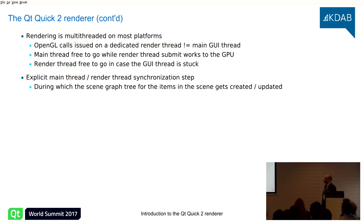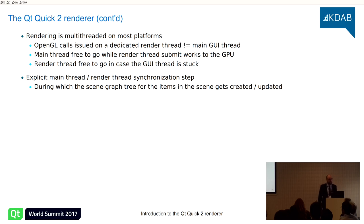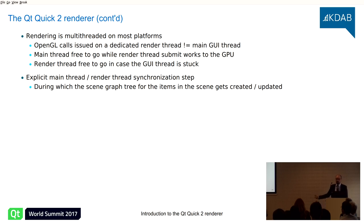The rendering is actually multithreaded on most platforms unless you disable it. This means the OpenGL calls that render your scene graph are issued on a dedicated render thread, not your GUI thread. This has two advantages: while the renderer is submitting work to the GPU, your main thread is free to update logic and do business work. At the same time, the render thread is free to keep rendering even if you accidentally block your GUI thread with an IO call.